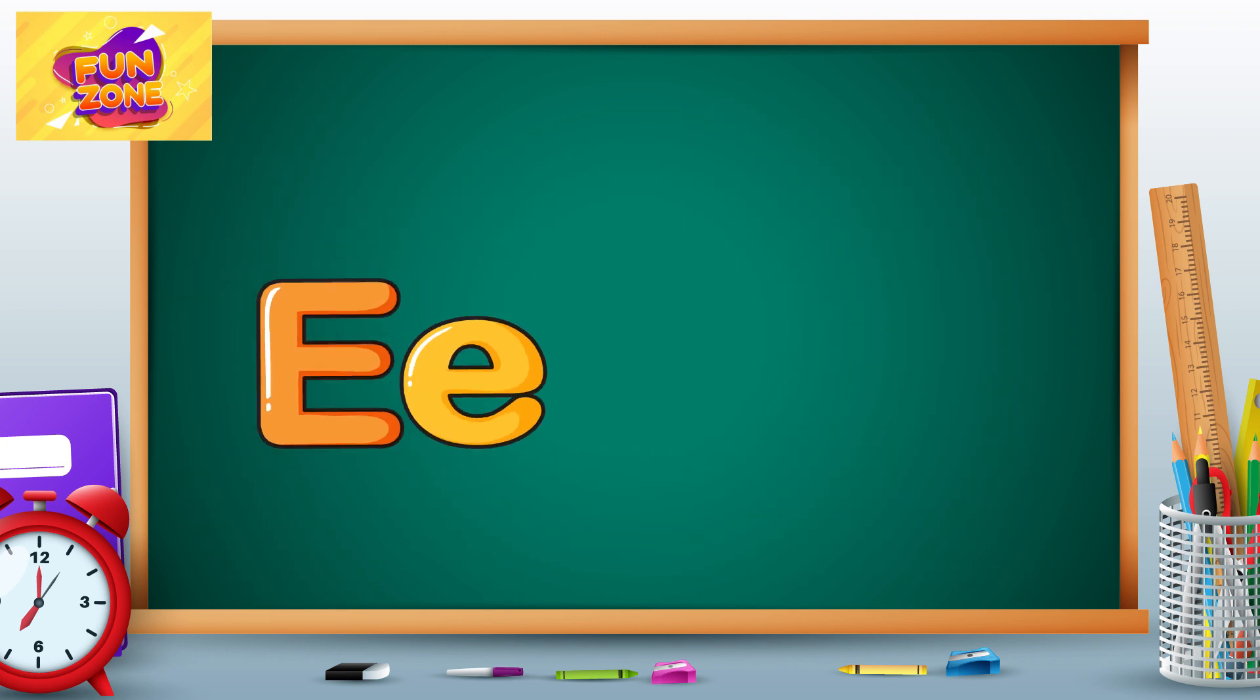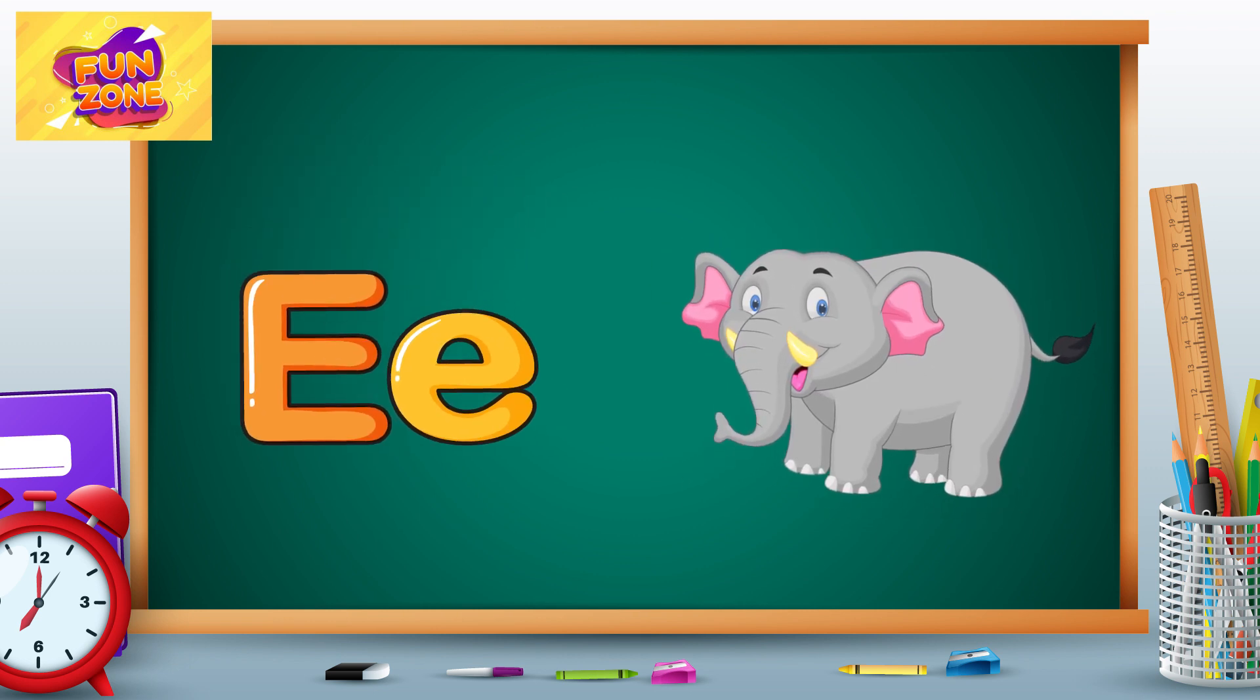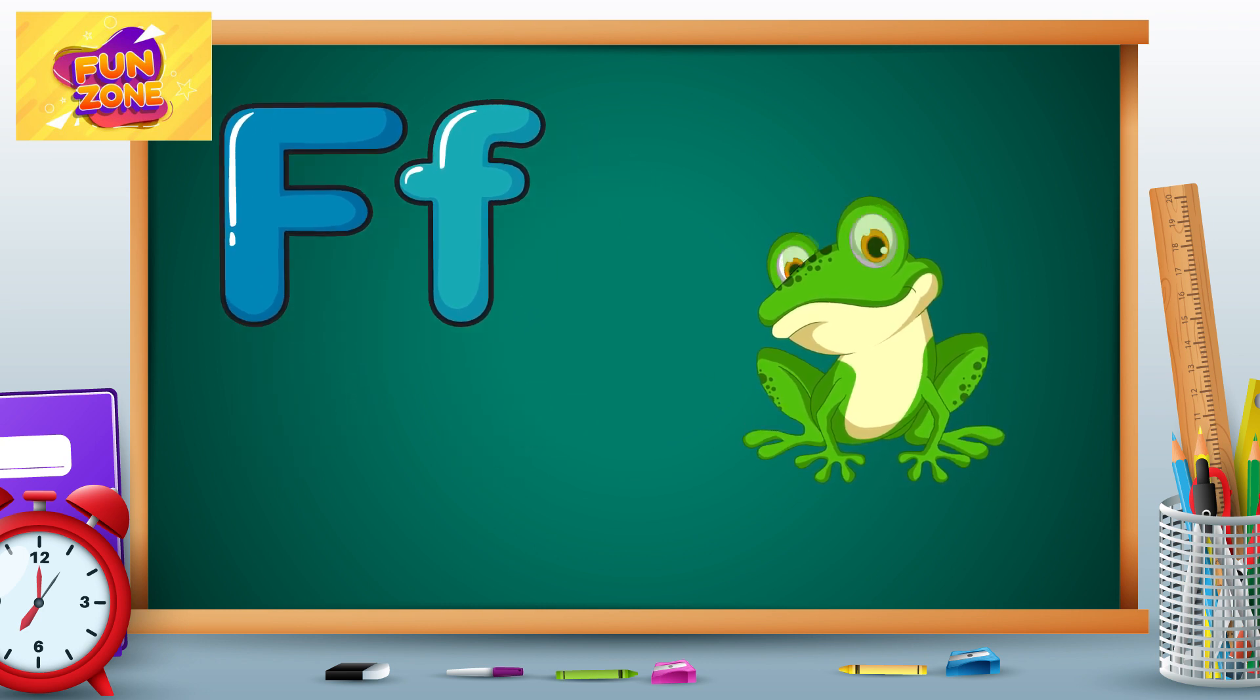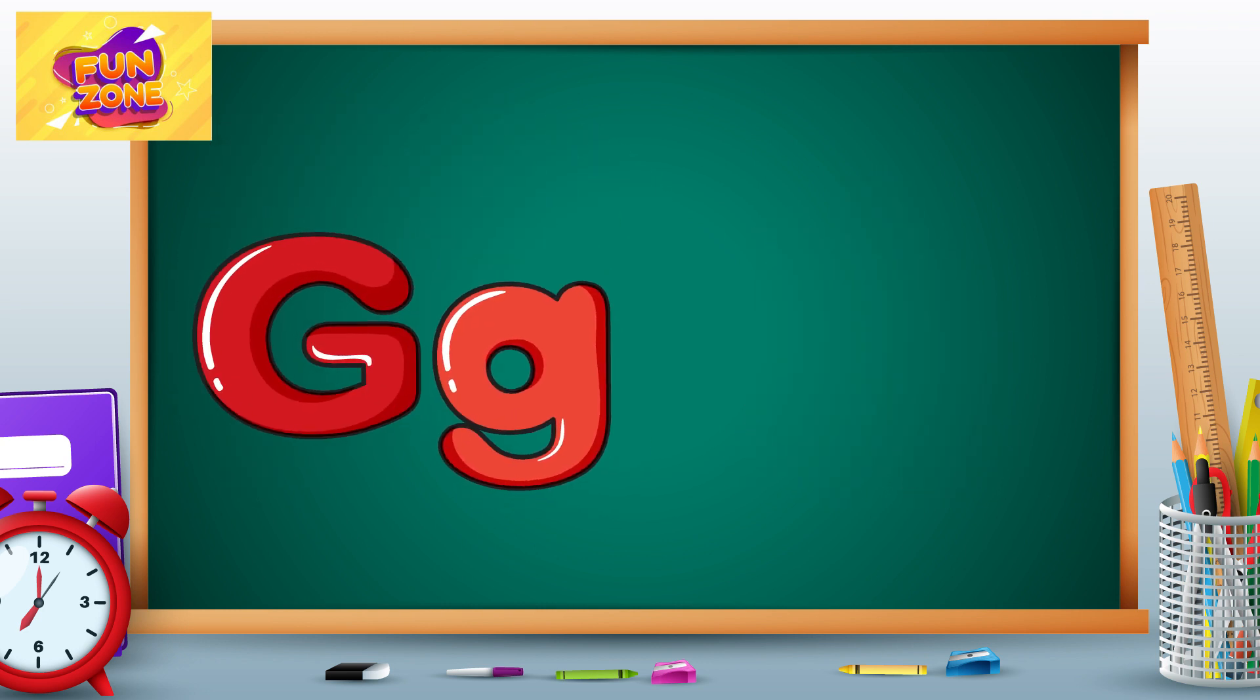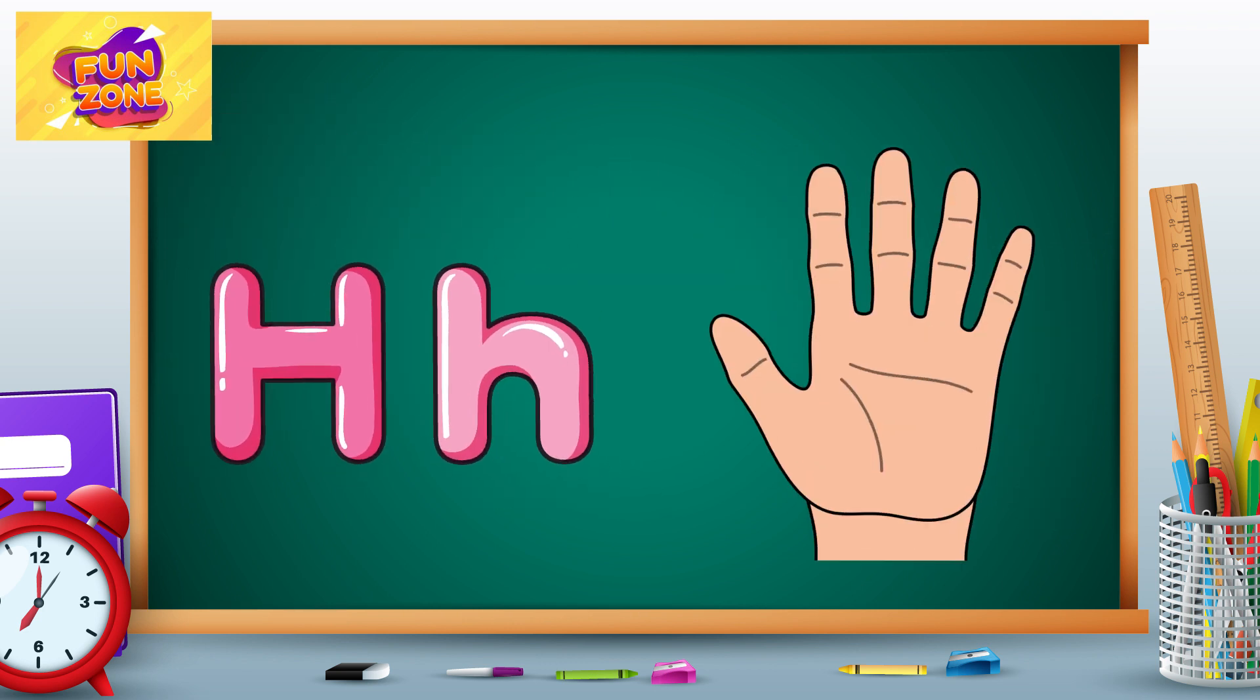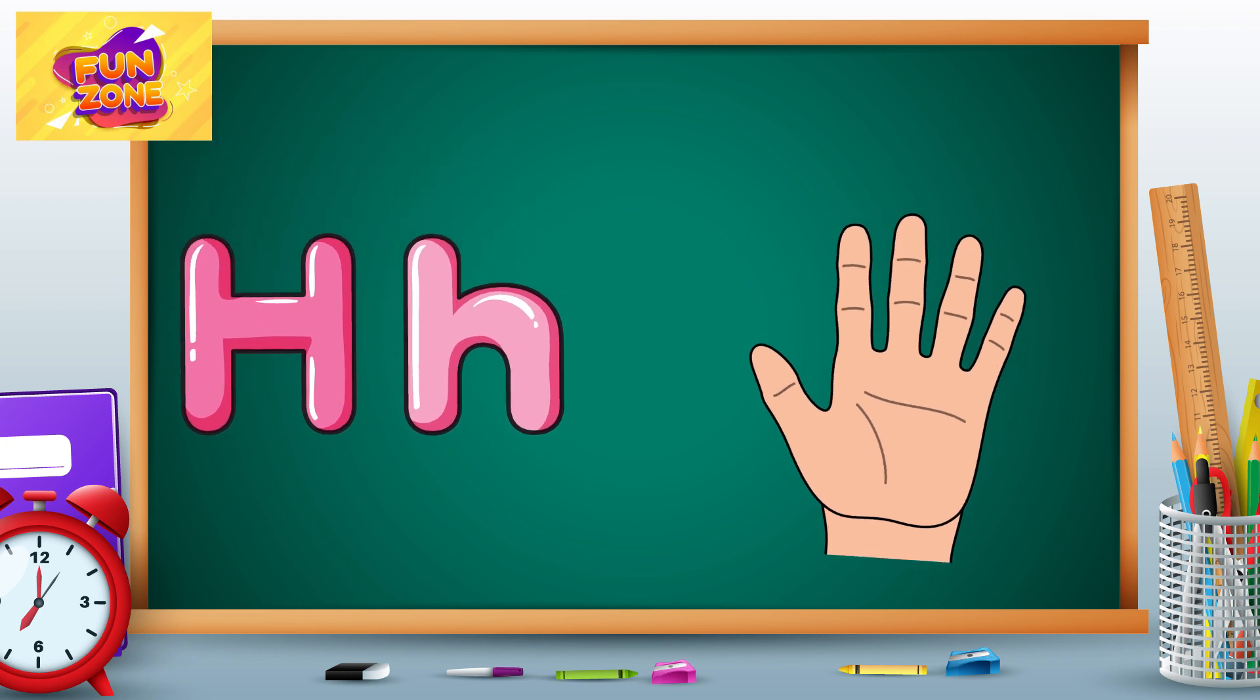E is for elephant, e-e-elephant. F is for frog, f-f-frog. G is for goat, g-g-goat. H is for hand, h-h-hand.